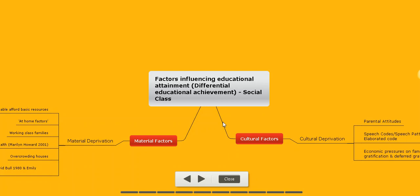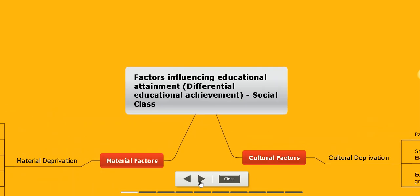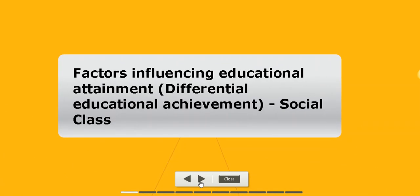Good morning to you all. Welcome to our second session of online classes. As mentioned in my last video, we will be discussing in more depth the topics connected to differential educational attainment or achievement. The main social groups related to differential educational attainment are social class, gender, and ethnicity. For today, we will start with social class.